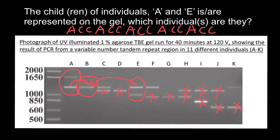So our answer would be person B. Person B can be a child of individual A and individual E.